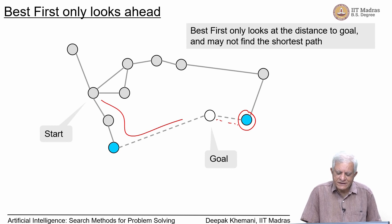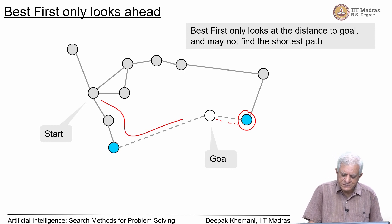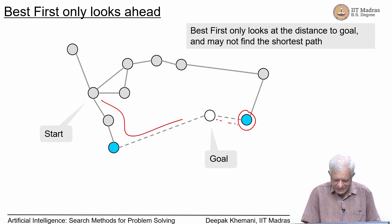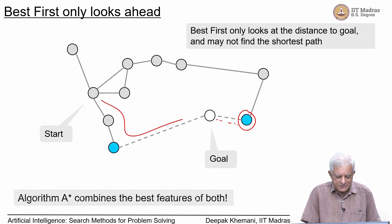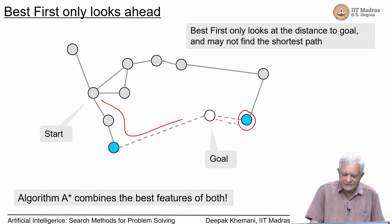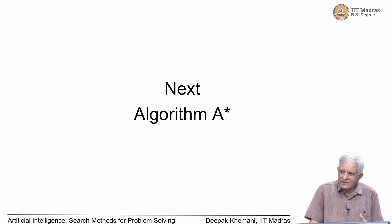What we need is an algorithm that behaves like branch and bound but also has a sense of direction like best first search. That is going to be our next algorithm: A*, which combines the best features of both. We will do that next.